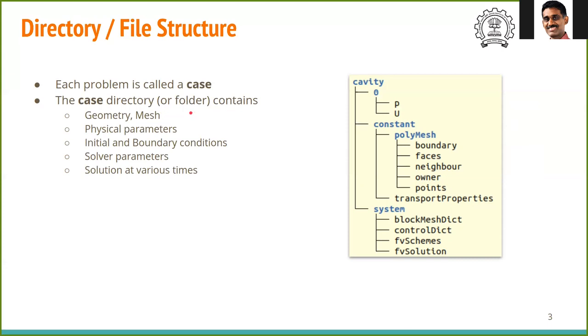This is an example of the case directory for the first problem usually everyone solves in CFD - the lid-driven cavity flow. This is also the first tutorial problem available in the OpenFOAM website. In this case, the name of the directory is cavity, which is the name of the case as well. The words in blue are directory names and those in black are file names. We have three subdirectories under cavity: zero, constant, and system. These three directories are essential for all OpenFOAM cases.